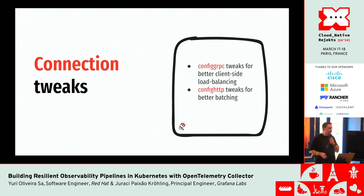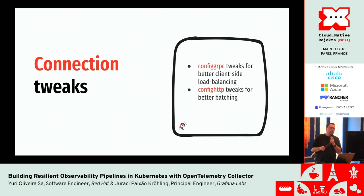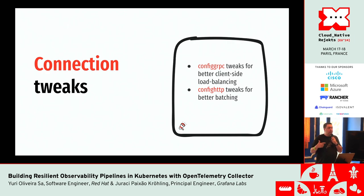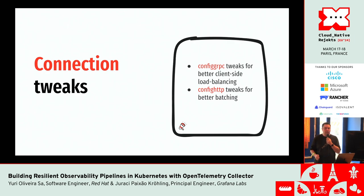By default we have an in-memory queue, but we can also use persistent queues. With persistent queues, data is written to disk when it can't flow to backends. So if our collector crashes, we can replay from disk. Or if a backend is off for longer than a few seconds, we can reduce memory consumption by flushing data to disk, giving us the possibility of larger queue sizes. Similarly to receivers, we can also make connection tweaks on the exporter side using config.grpc and config.http for better client-side load balancing and batching.